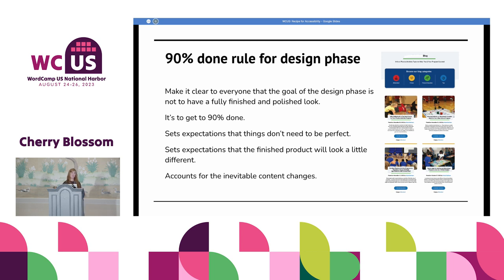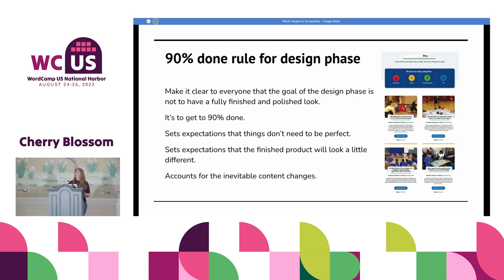The 90% done rule: the reality is something will change down the line. Even if it doesn't change between design and when you go live, content will change down the road. So you don't want to focus on getting it 100% correct — because it's never going to be done, it's a website, it changes. Make it clear to everyone involved — designers, developers, clients — that your goal in design phase is to hit 90%. This also helps a lot of people to not obsess over the little details.